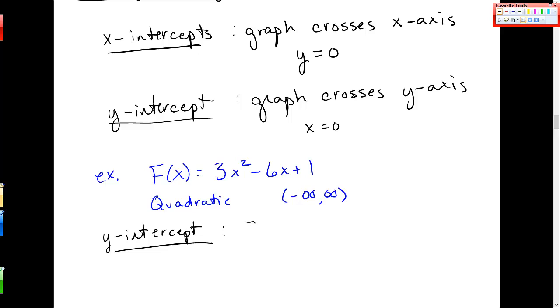So I'm going to plug in, it's really f(0) when x is 0. So I plug in 0 everywhere. And I get 1. So the point x is 0, y is 1 is this y-intercept.